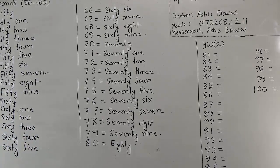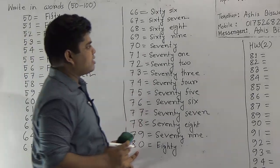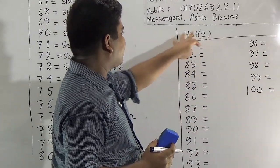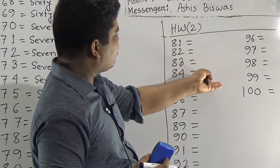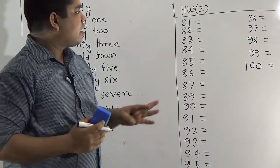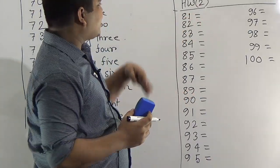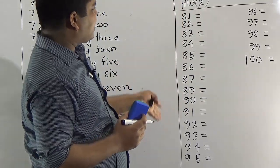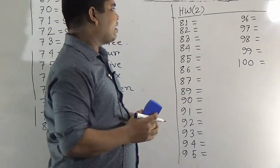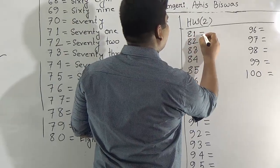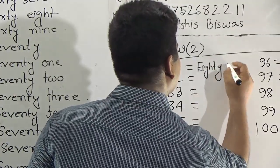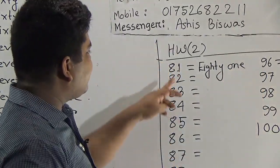My dear students, this is our today's classwork — that means 50 to 80. And now I shall give you homework number 2. The topic is: write in words from 81 to 100. At first, pick up the numbers in your homework copy, then write the date at the top of the page. After that, write 81, then give an equal sign and start to write in words. At first write 81, give an equal sign, and then write E-I-G-H-T-Y, eighty-one. Similarly write 82, 83, 84, 85, 86, 87, 88.